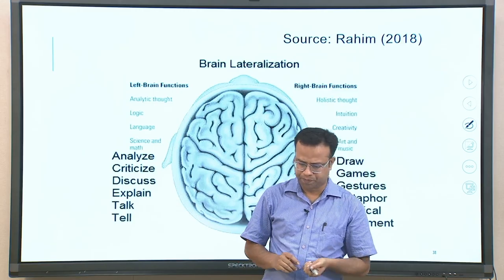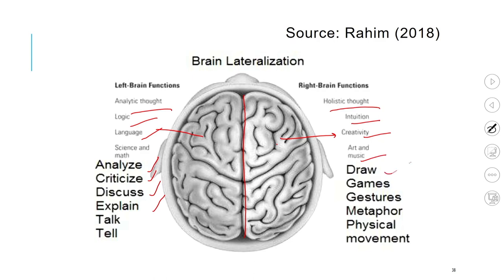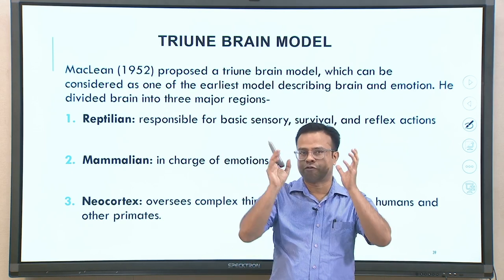This picture taken from a research paper clearly illustrates the lateralization concept. You can see a fissure dividing the left and right parts of the brain. The left brain is associated with analytical thought, logical thought, language, analyzing, criticizing, explaining — mostly language and thinking. The right half is about holistic thought, intuitions, creativity, art, music, drawing, and gestures — more creative and emotional aspects controlled by the right half.